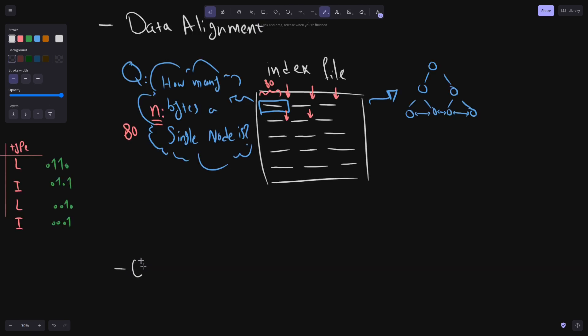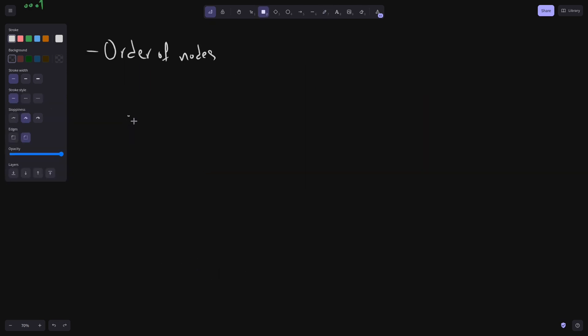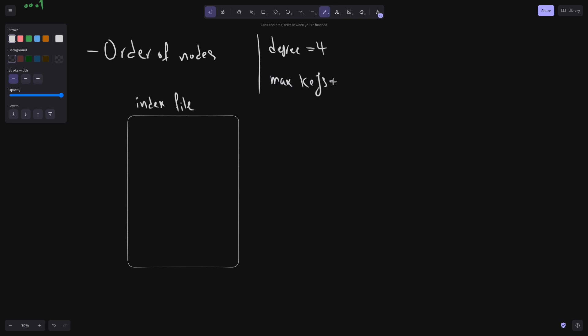Next, we want to talk about order of the nodes in an index file. We assume that we have an empty index file. Which also means our tree is empty for now. Again, for our assumption, the degree would be four. And that means we have maximum of three keys in each node. Let's see how the file grows as we want to add numbers 10, 20, 30, and 40.